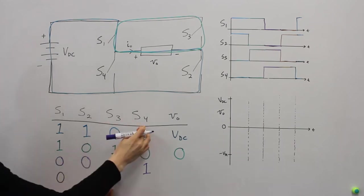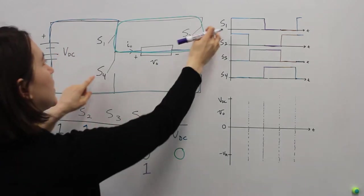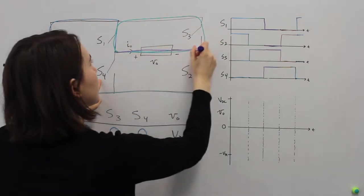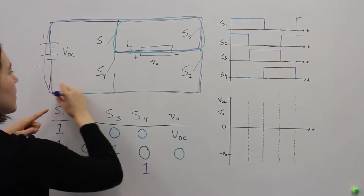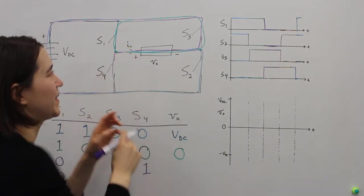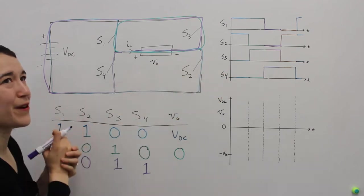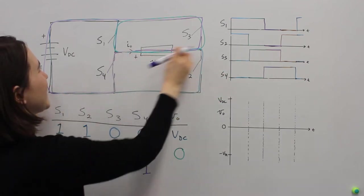With this, S3 and S4 are on, S3 and S4. So that means that our current path is going to be this way. We're drawing lots of lines on top of each other, but hopefully you can follow.